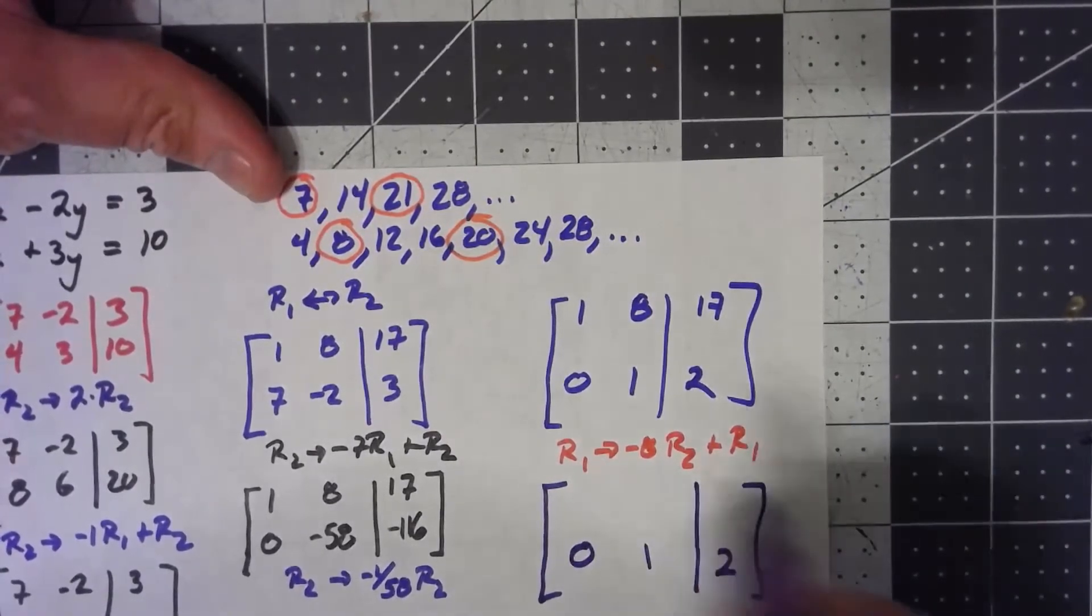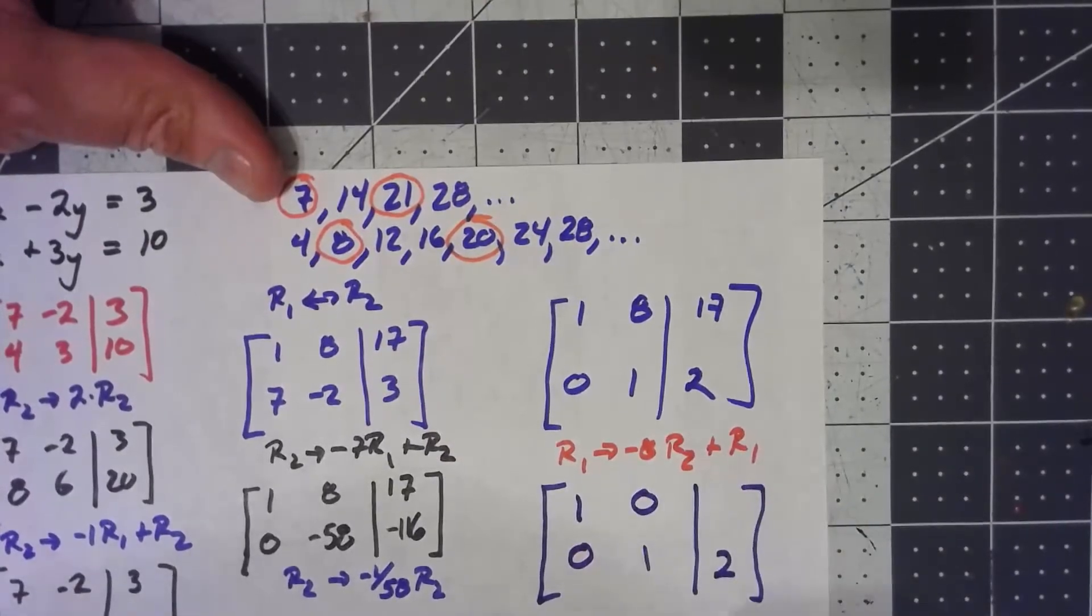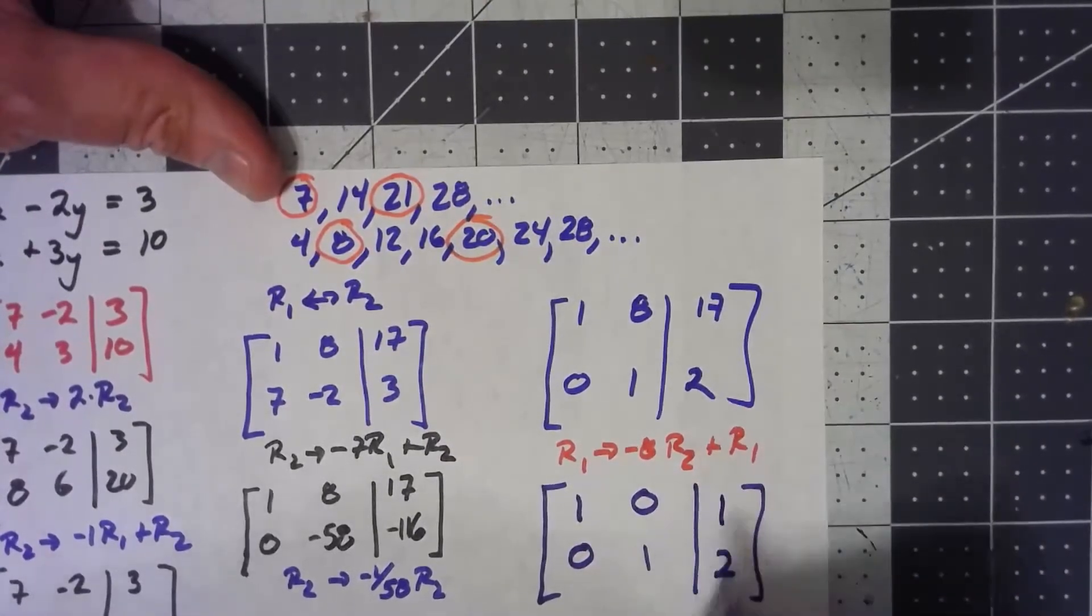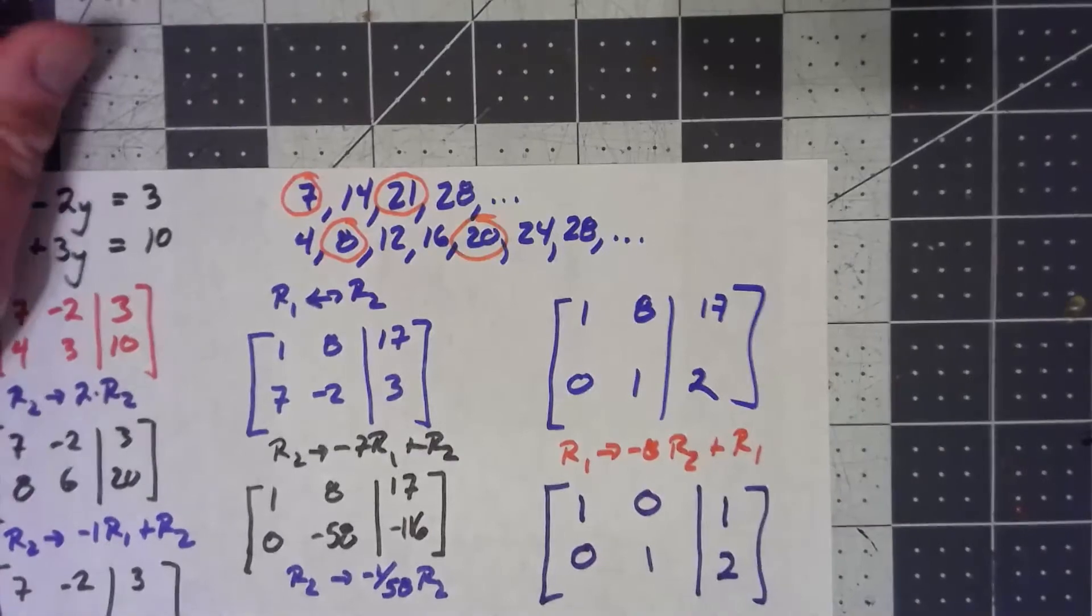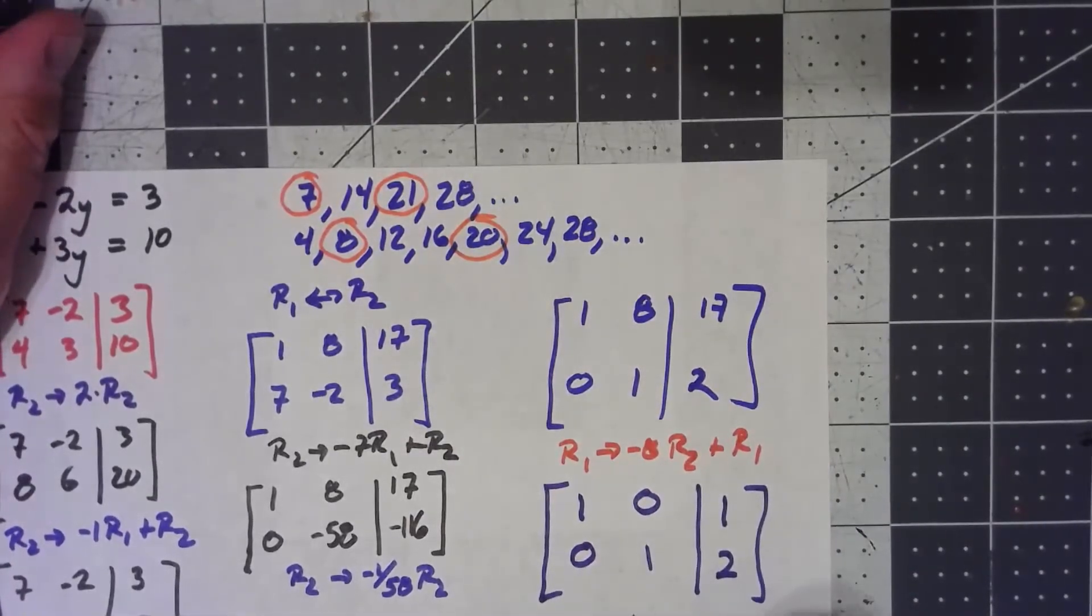Not changing the second row. That becomes a 0. Negative 16 added to 17 gives me a 1. So x is 1 and y is 2, and there you've got it.